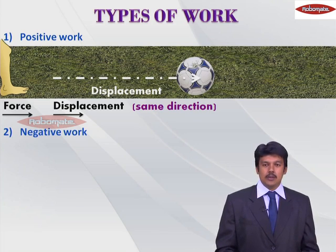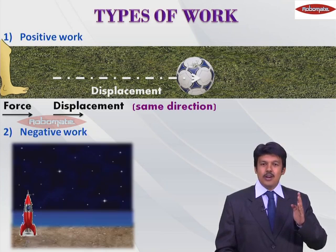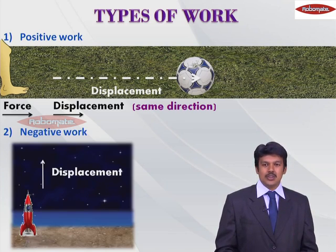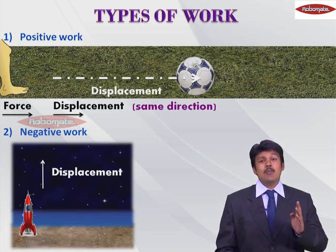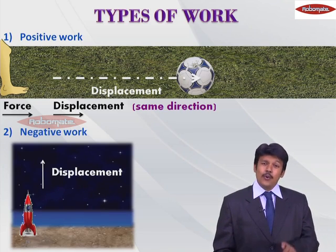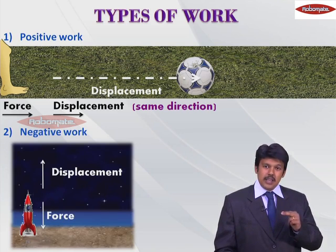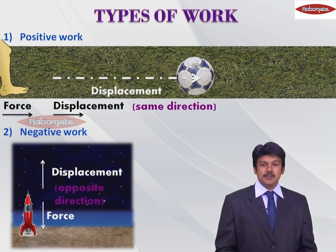The second type of work is called negative work. Consider a rocket — when the rocket moves upward, it gives out gases in the downward direction. So the displacement occurs in the upward direction while the force was applied in the downward direction. Since displacement and force are in opposite directions, this type of work is called negative work.